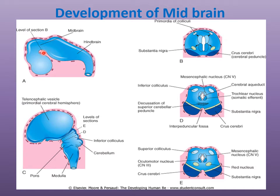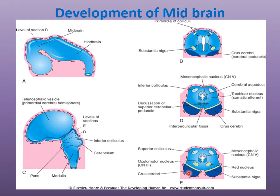In a cross-section of the developing forebrain at the mesencephalon level, the initially wide neural tube later narrows to form the cerebral aqueduct, which communicates with the third and fourth ventricles and aids CSF flow. The primordia of the colliculi from the alar plate form the superior and inferior colliculi, while the basal plates migrate ventrally to form the oculomotor and trochlear nerve nuclei, the red nuclei, and the substantia nigra, which may develop from the basal or alar plate.